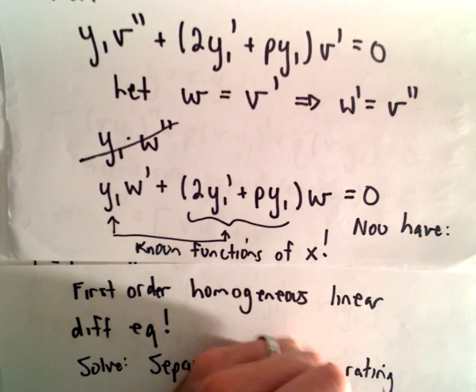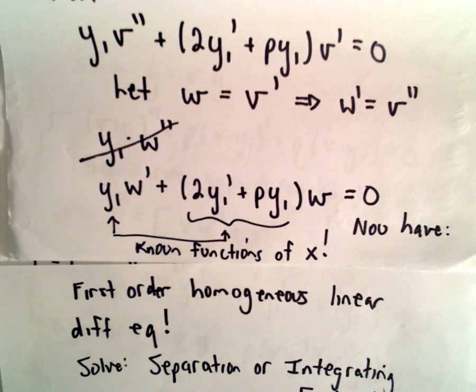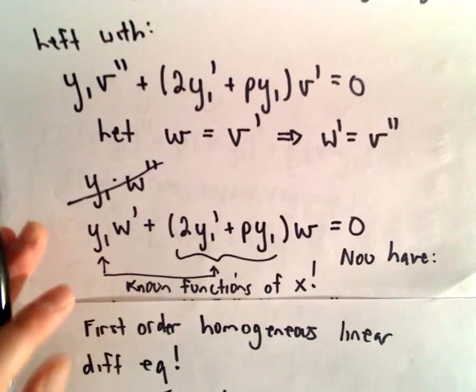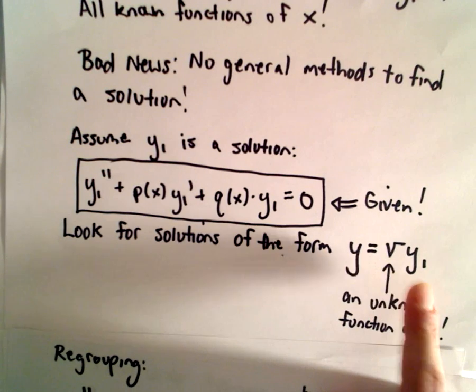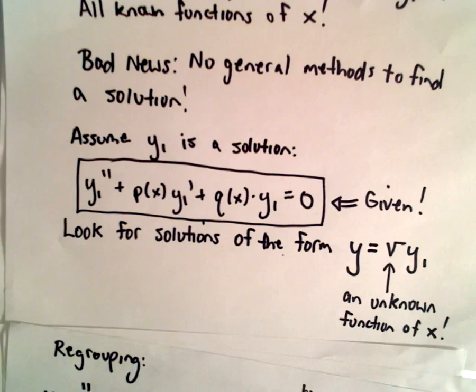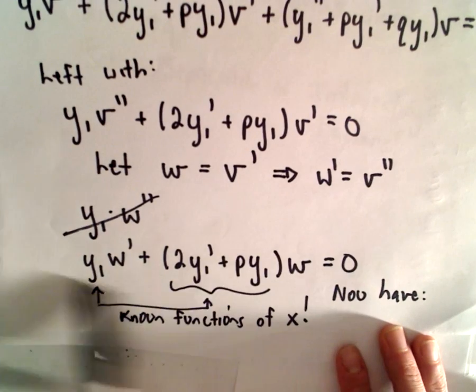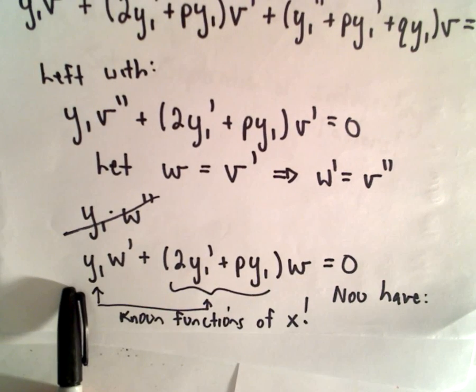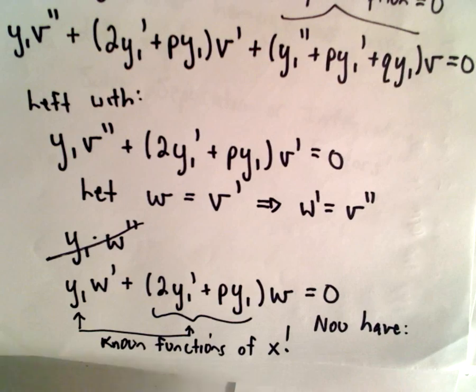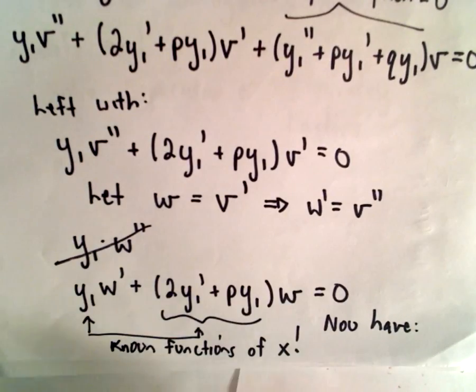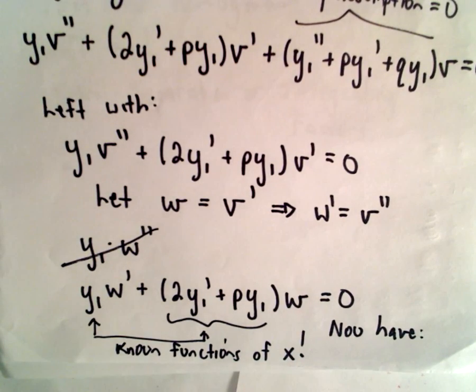So that's basically the justification that this method will work. If we look for solutions of the form v times our known solution — some unknown function of x multiplied by our known solution — it says we now have a reduction of order. We went from a second order differential equation down to a first order differential equation. You're not done at this point, but this is the basic idea. In my next video I'll actually do a concrete example to show how this works.